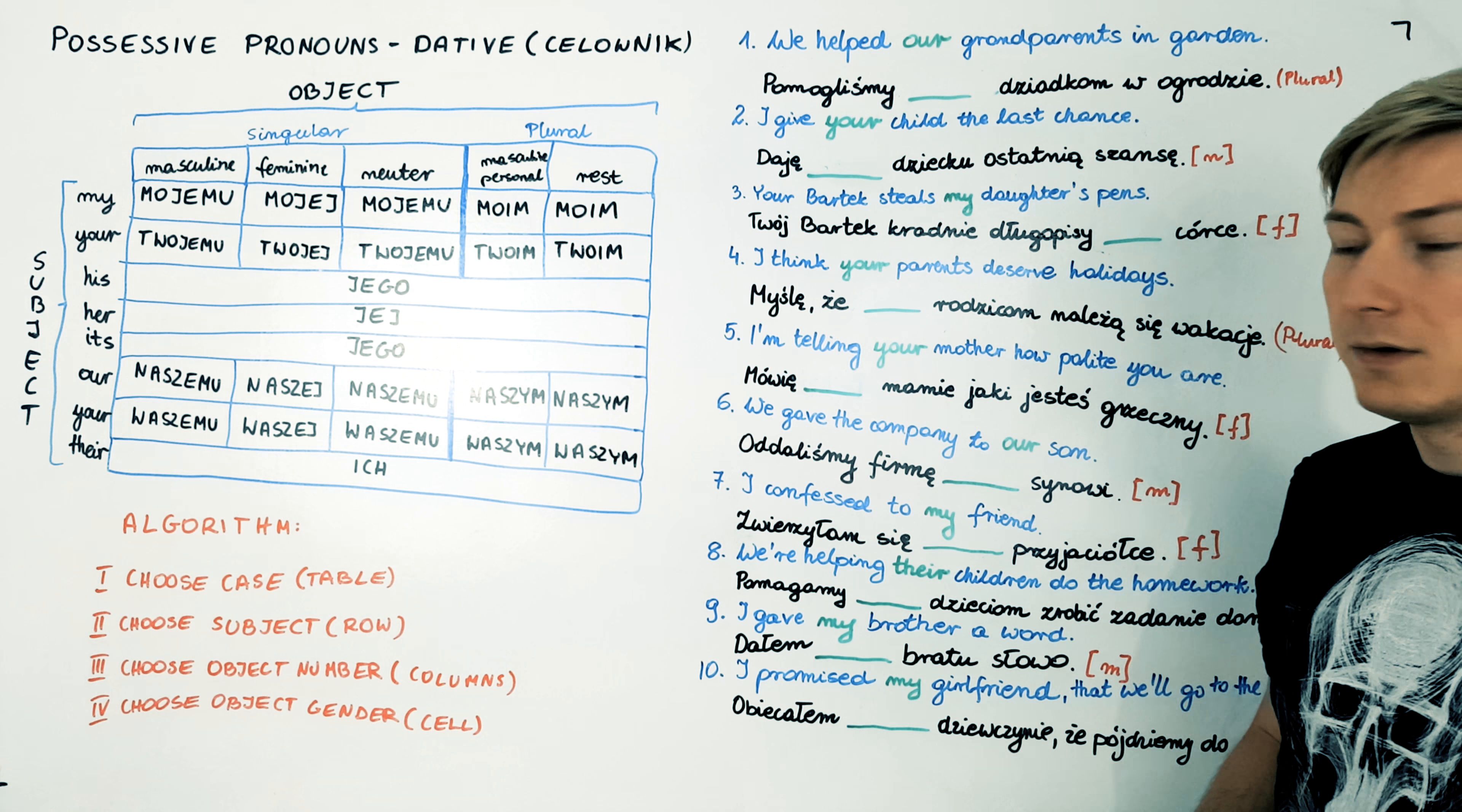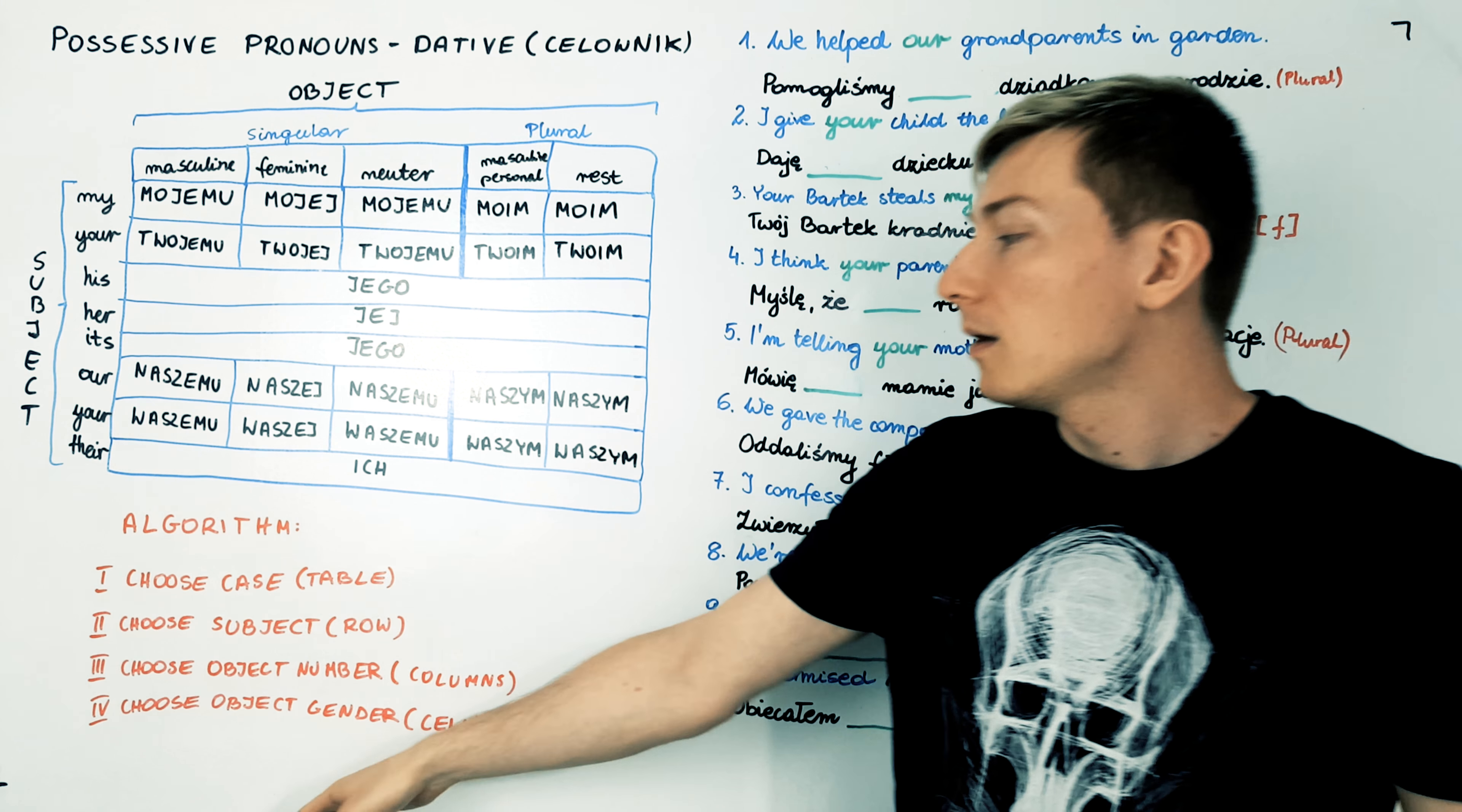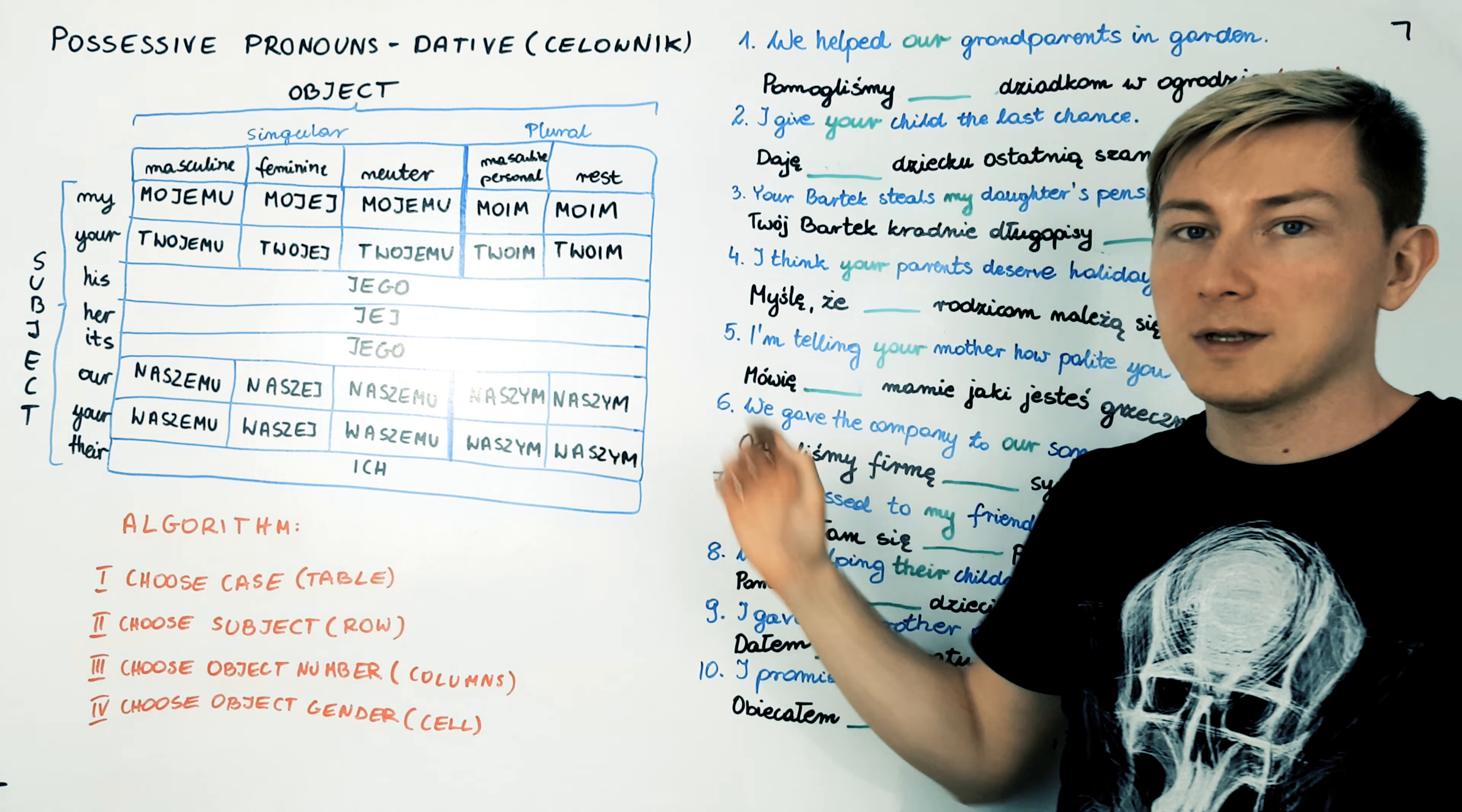Then choose object number. Grandparents are plural. So we choose the right part of the table. Now we can skip the last step because when the object is plural, the form of the pronoun is the same.